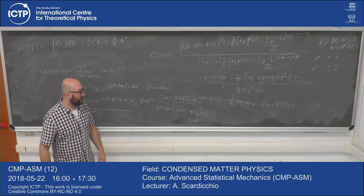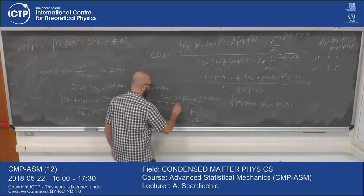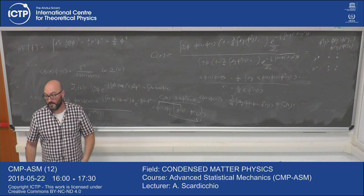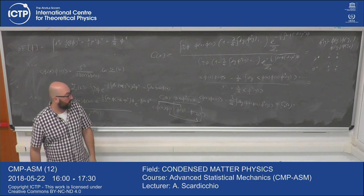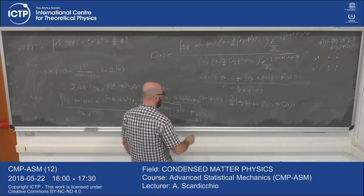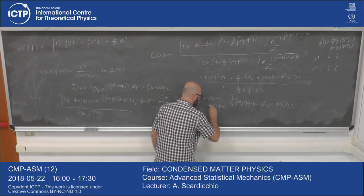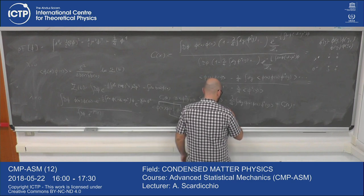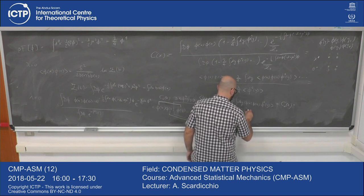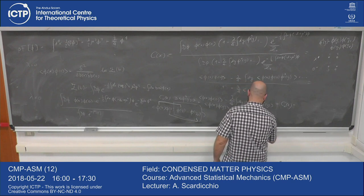So this would be three times the average of phi y squared. And then there are other terms — the other terms come when we contract x with one of the y's, and 0 has to be contracted with the other ones. These will also be equal, and this time we will have phi of x contracted with phi of y, and then phi of 0 contracted with phi cubed of y, which would be three times that contribution.